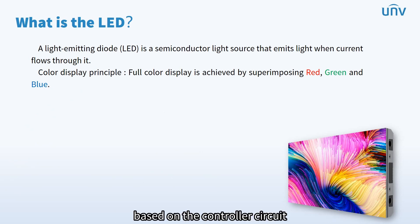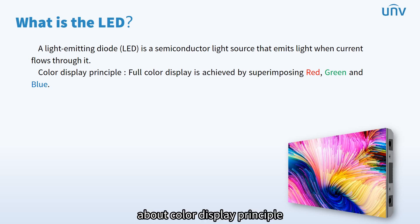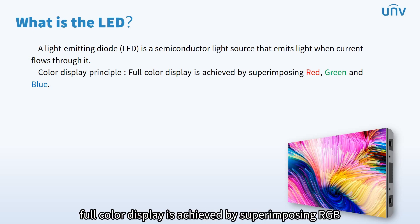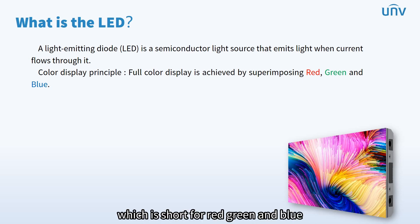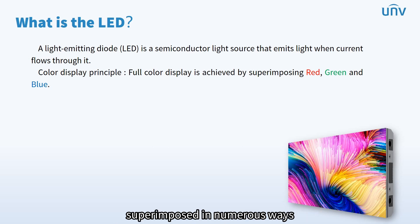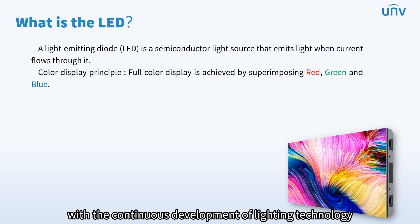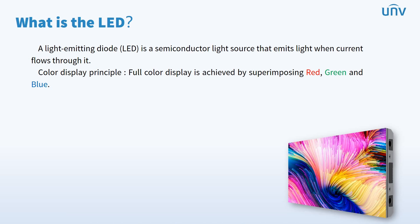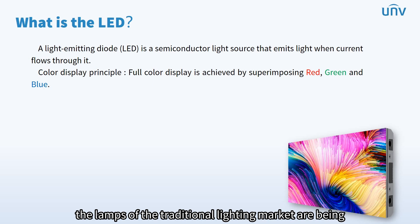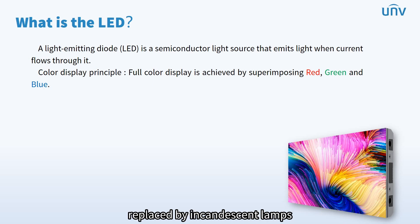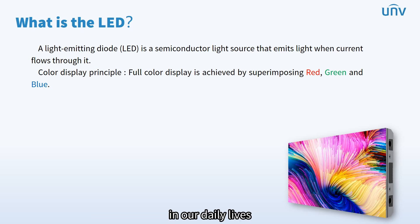Based on the controller circuit, LED can directly emit light. About color display principle, full color display is achieved by superimposing RGB, which is short for red, green, and blue. They are the three primary colors that can be superimposed in numerous ways to produce a wide range of colors. With the continuous development of lighting technology, the lamps of the traditional lighting market are being replaced by incandescent lamps with LED, which is playing an increasingly important role in our daily lives.